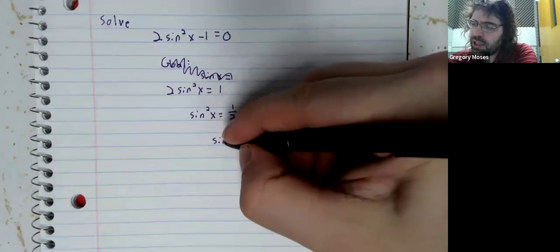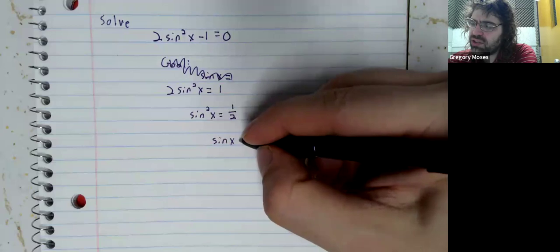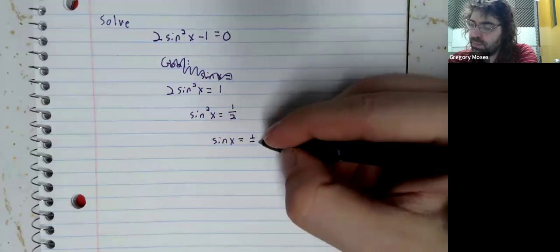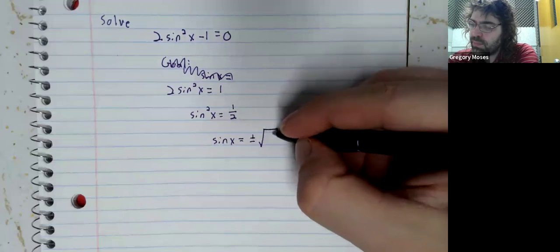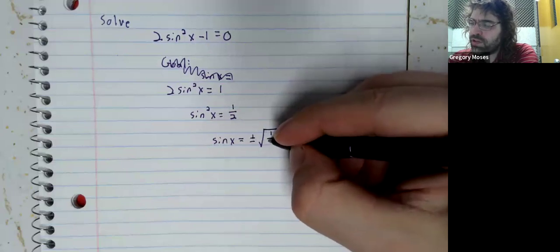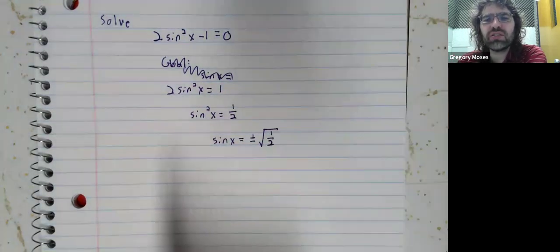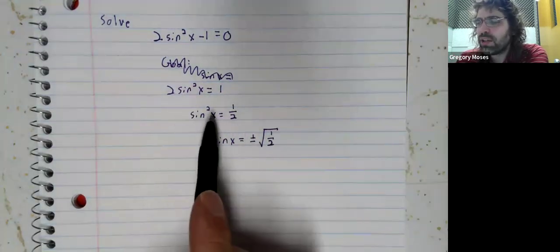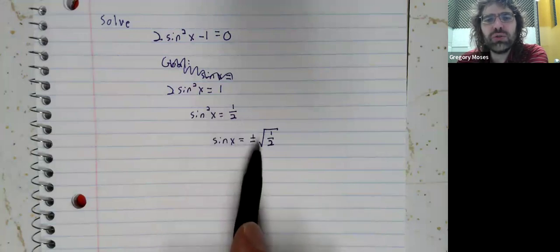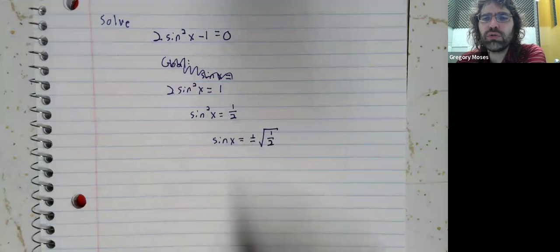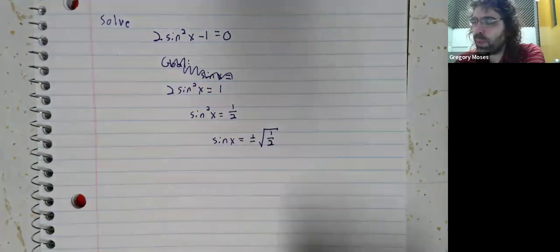And we can solve this carefully. A lot of students, even quite advanced students, will forget that this has two solutions, a positive square root and a negative square root.